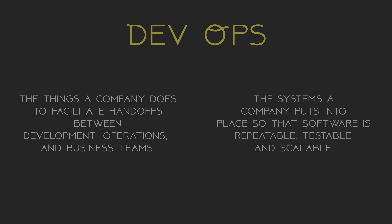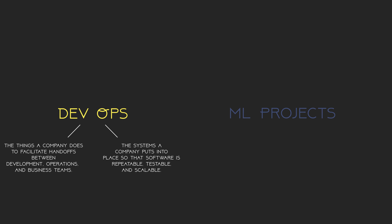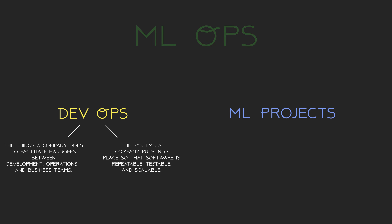Enough about DevOps. What is MLOps, and how is it different? MLOps expands the scope of DevOps to include machine learning projects. Machine learning projects can come with their own baggage and can be a bit messier than traditional software projects. There's a big boom in MLOps tools right now, and it's exciting to see many people recognizing the importance of machine learning at scale.